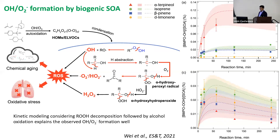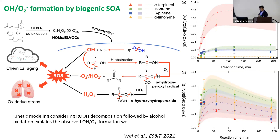Going further, we found not just OH radicals but also superoxide (O2−) generated by secondary organic aerosols from alpha-pinene, isoprene, beta-pinene, and D-limonene SOA. We hypothesize that organic hydroperoxides generated by auto-oxidation partition into the water phase, decompose to form OH radicals, react with alcohols to form hydroperoxyl radicals, which then decompose further to O2−. By implementing this mechanism in the model, we can explain the observed kinetics — this is the plausible pathway for ROS formation.